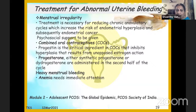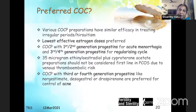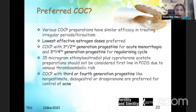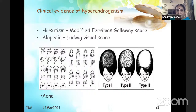Either a synthetic progesterone or dydrogesterone can be administered in the second half of the cycle. Heavy menstrual bleeding and anemia also need immediate attention. All OCPs have similar efficacy; lowest effective estrogen doses are preferred. First and second generation progestins — norethisterone — are used for acute menorrhagia. Third and fourth generation progestins — norgestimate, gestodene — are used for regularizing cycles. Cyproterone acetate-containing preparations should not be considered first line in PCOS due to venous thromboembolic risk; third or fourth generation progestins are preferred for control of acne.